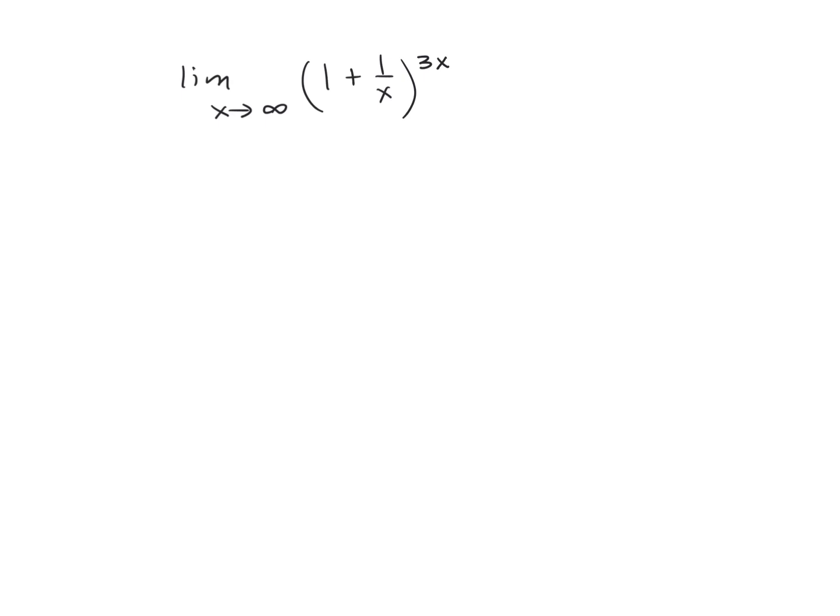This is the section on L'Hôpital's rule, so we will try to apply that method if possible. First, we need to find the form of this limit. The form is going to be 1 raised to the infinity power. To see that, we have 1 over x going to 0.